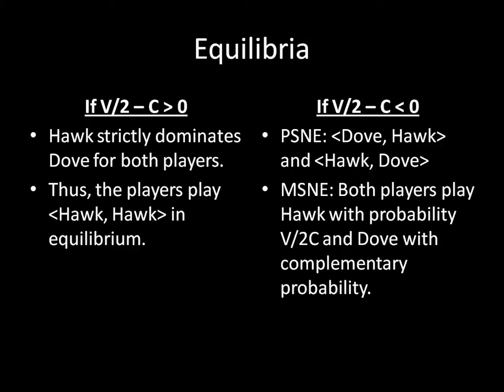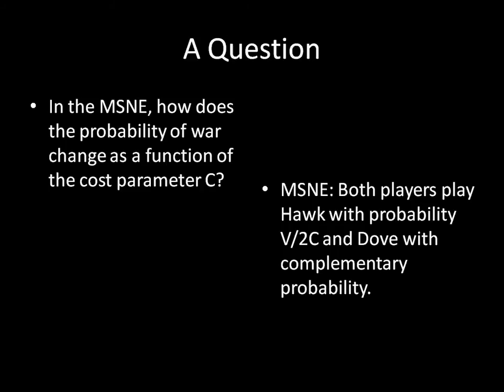We already did all of this, but now I have a question: in the mixed strategy Nash equilibrium, which I've conveniently left up right here, how does the probability of war change as a function of the cost parameter C?